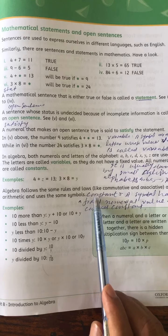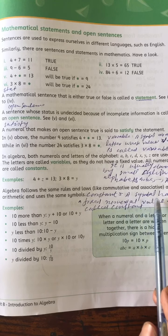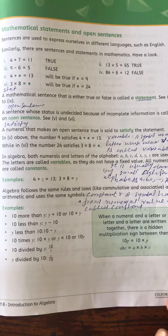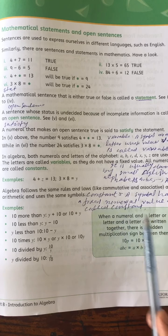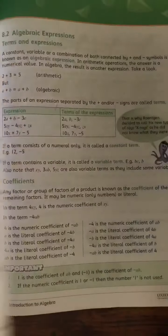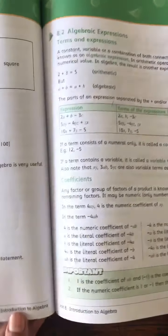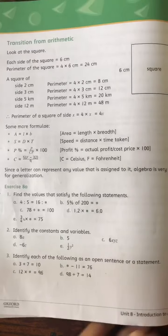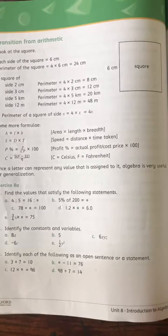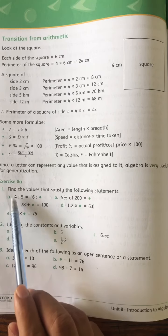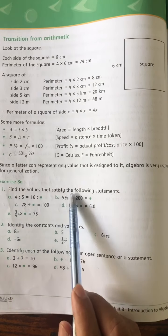Constant: A symbol having a fixed numerical value is called constant. Now we solve exercise 8a, page 90, question number 1: Find a value that satisfies the following statement.